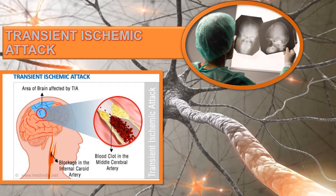Both TIAs and RINDs may damage brain tissue with repeated insults. At discharge, the patient needs to know that this is something we take seriously. They're going to be placed on anticoagulant therapy and should be aware of bleeding precautions and the actions they need to take once they experience those symptoms.